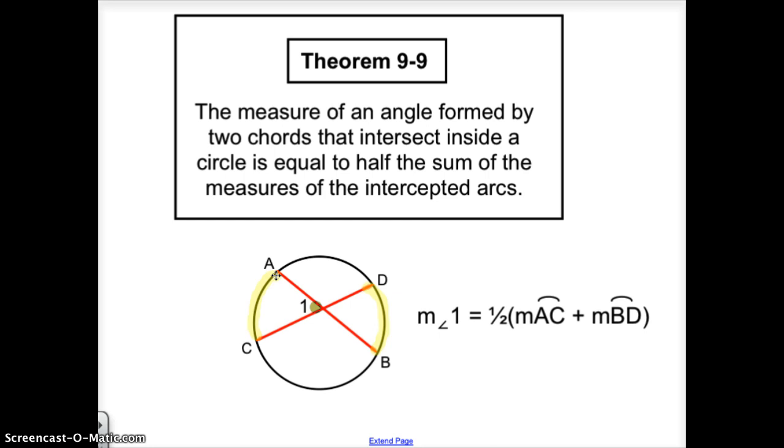Anytime you're finding a measure of an angle on the inside that's not the center point, you're going to add the two intercepted arcs and then divide by two, otherwise known as finding the average of the two arcs.